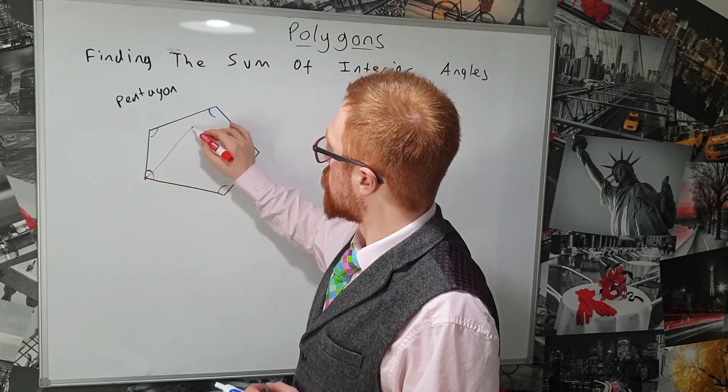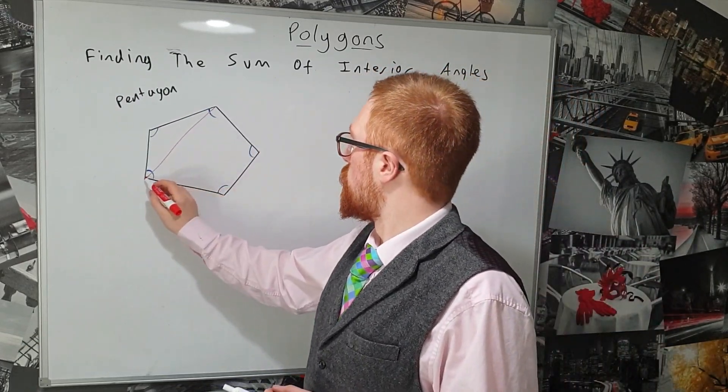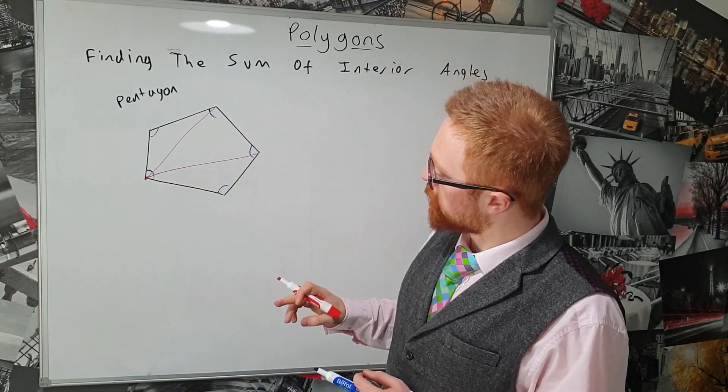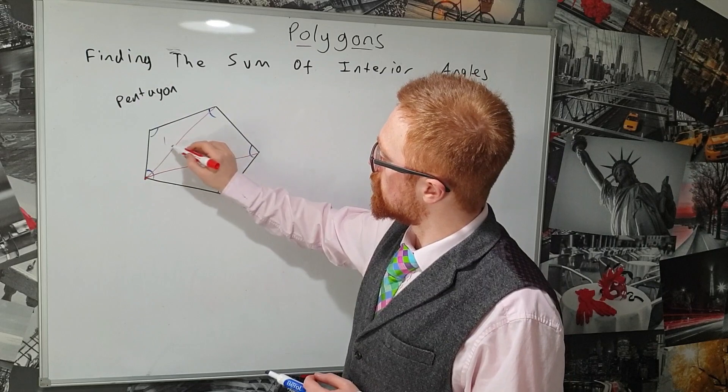So I'll start here and we'll go across to that corner. There's one triangle and we'll go across to that corner. Now let's split it into one, two, three triangles.